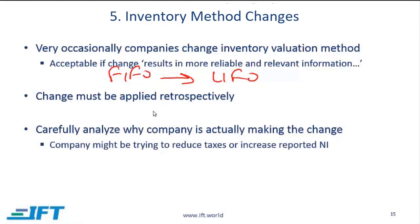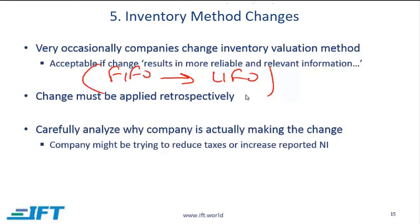There are some exceptions to this, but generally a company would need to also show LIFO numbers for previous years, and this has to do with the fundamental principle of comparability. If you are analyzing a financial statement and looking at inventory numbers over the last three years, you would obviously want to compare inventory numbers reported using the same method.